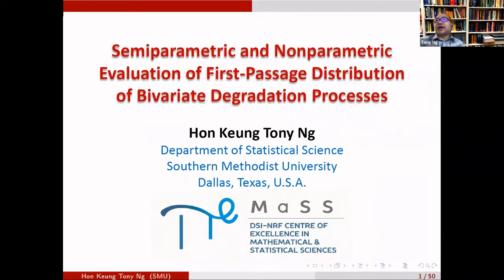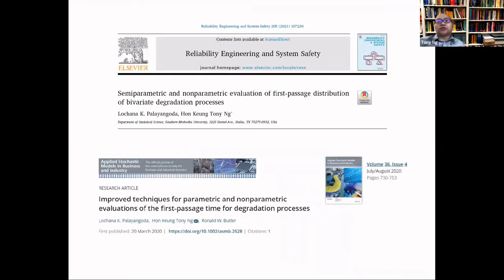Today I'll present something about first passage time distribution of bivariate degradation processes. This work is based on two recent papers that my student, myself, and my colleague worked on. One is in Reliability Engineering and System Safety, published this year, and the other is in Applied Stochastic Models in Business and Industry. If you're interested in more, you can look at these two papers.